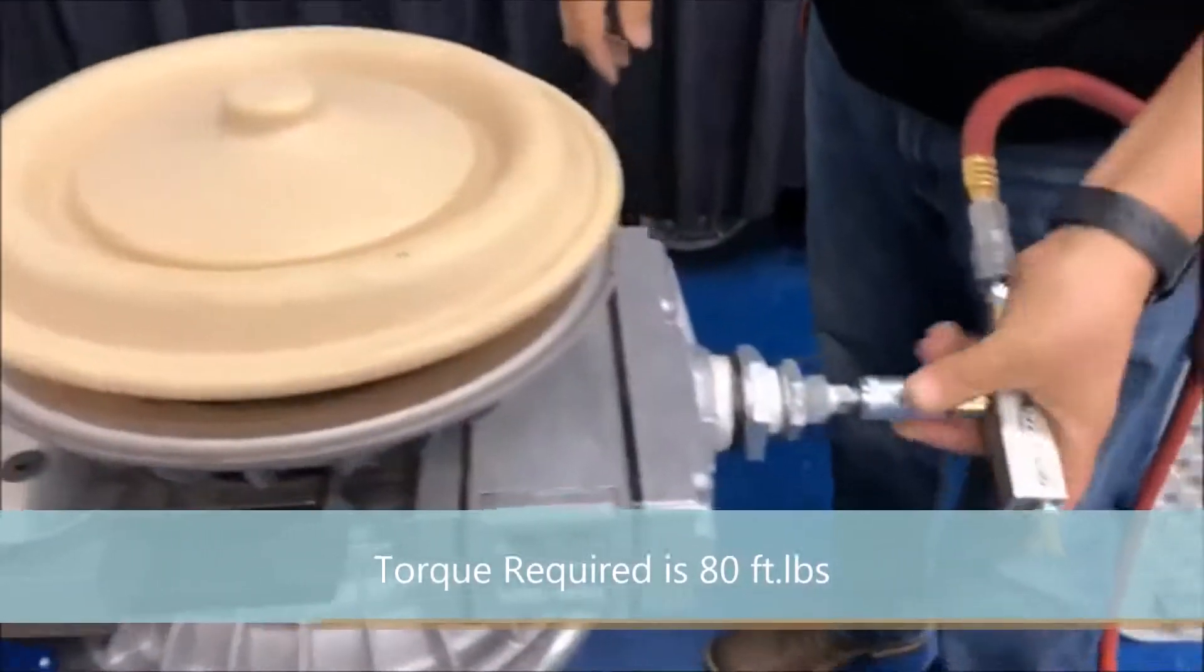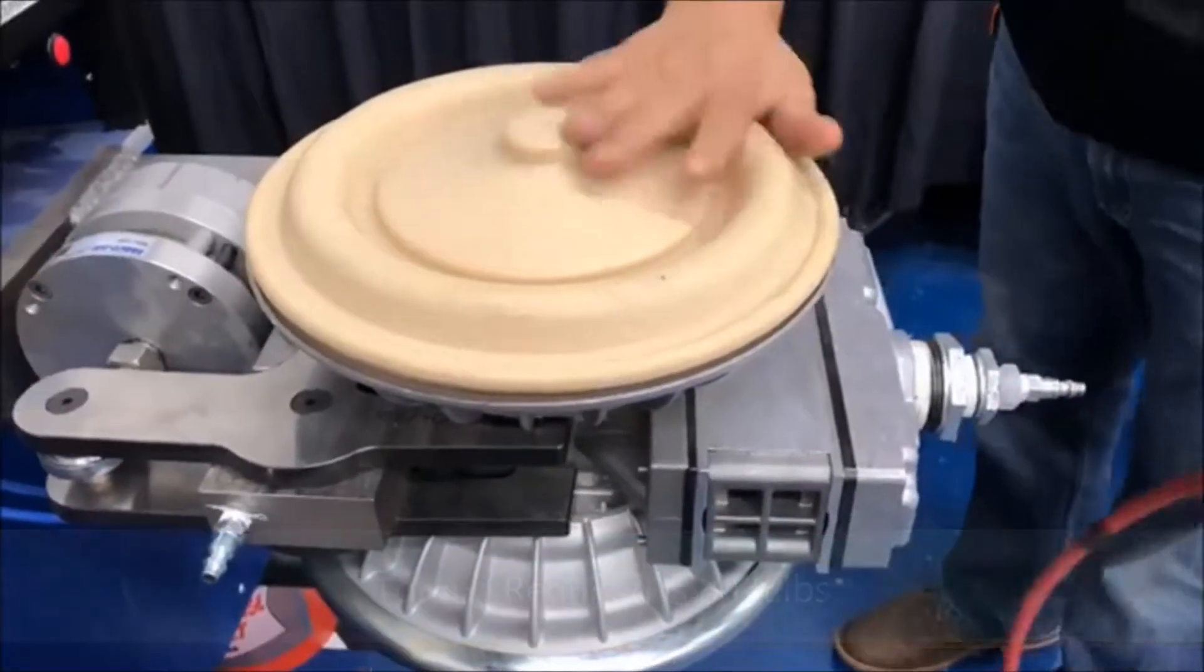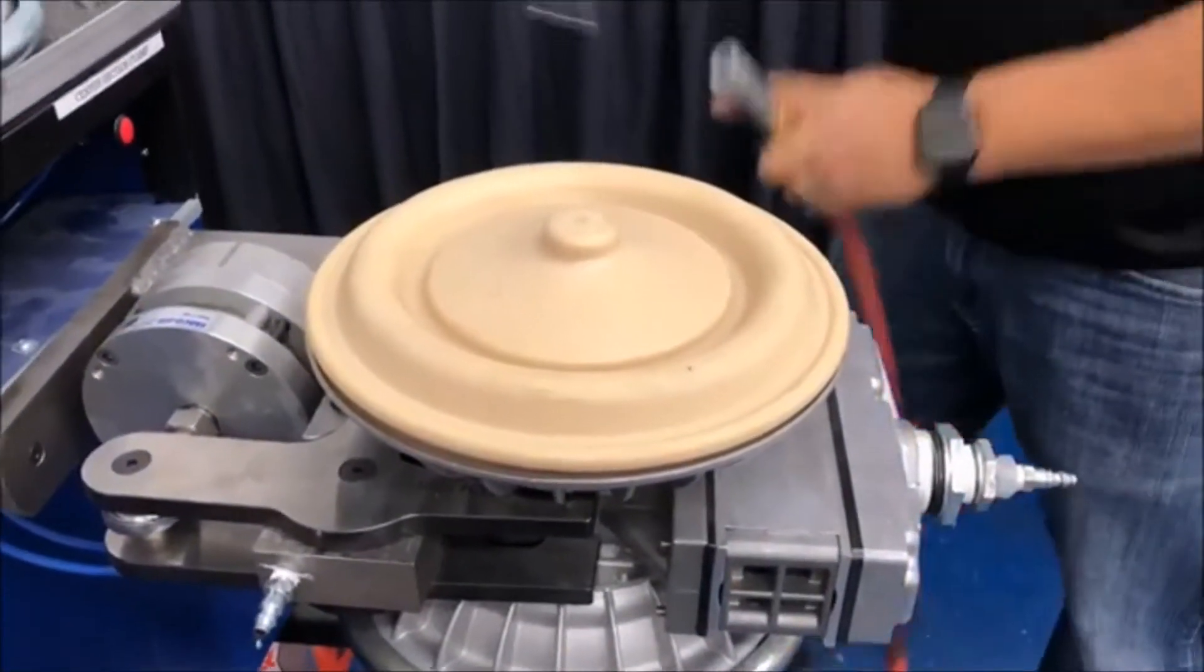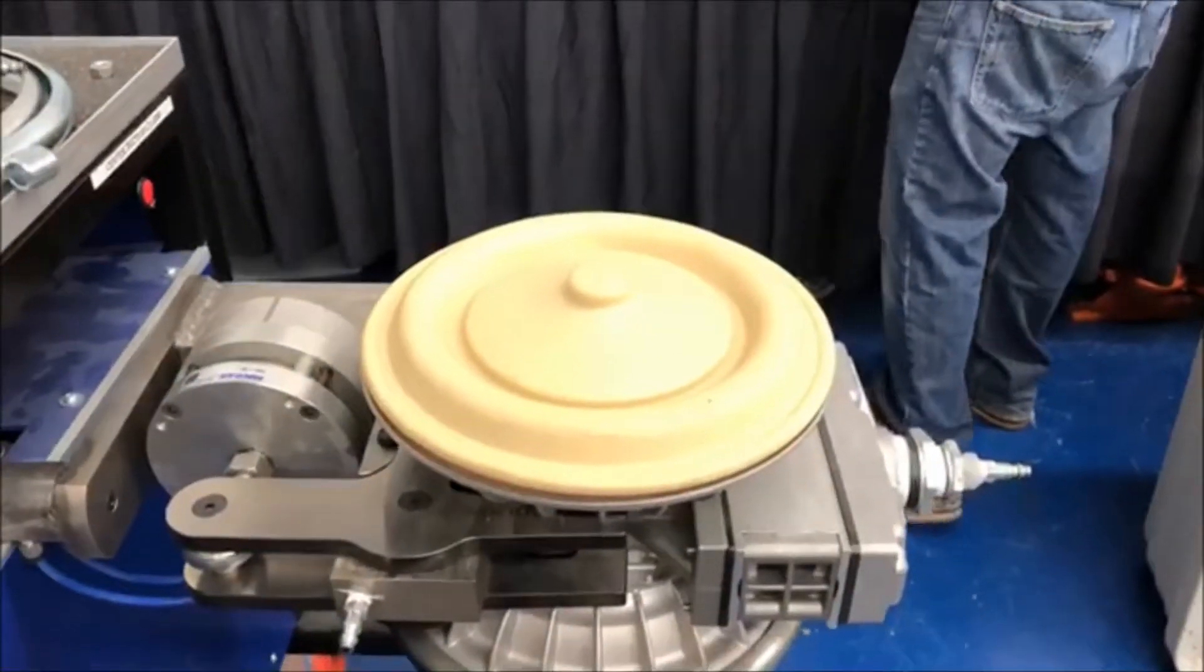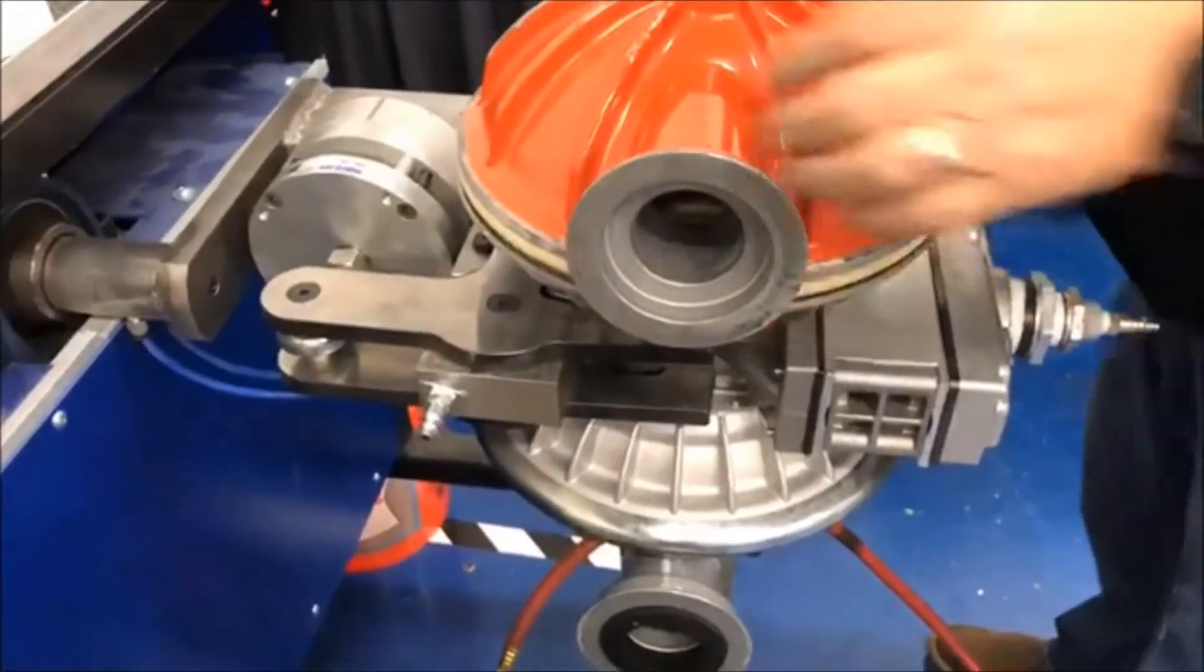Once you're done, release the vacuum generator. It drops back down. You can put your other liquid chamber on there nice and easy now. So if we had to put side B on, we take that, drop it in, and you're good to go.